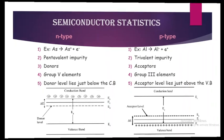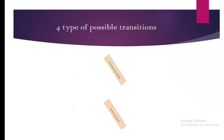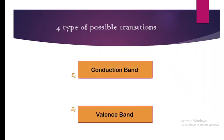Next, let us study the four types of possible transitions which an electron can do in order to contribute to electrical conductivity. If you consider the conduction band and valence band...